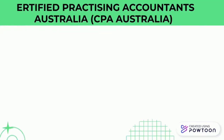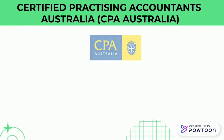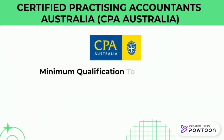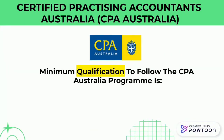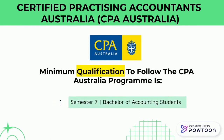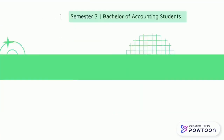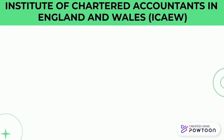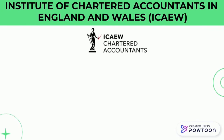The fourth paper is CPA Australia. It has only one minimum qualification to follow, which is you have to be a student of semester 7 studying the Bachelor of Accounting.